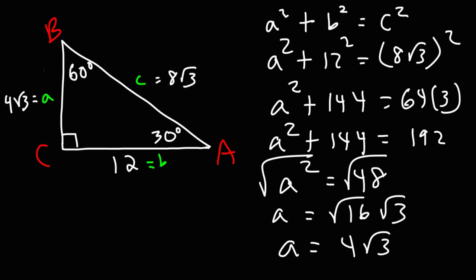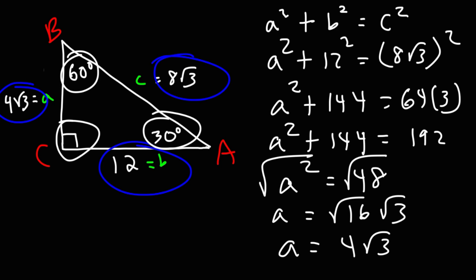Now we have everything — all three sides of the right triangle and all three angles. That's what you need to do to solve a right triangle: calculate every missing angle or side length.